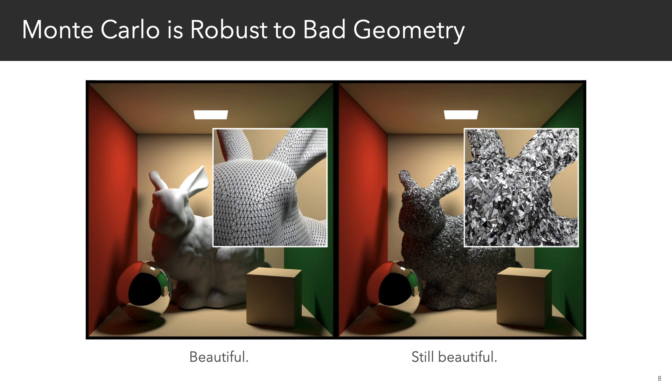And actually, it's precisely for this reason that Monte Carlo methods in rendering are very robust to bad geometry. Even if your mesh is horrible, you end up getting renderings that don't look very different from what you'd get if you had a nice mesh.